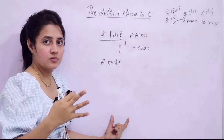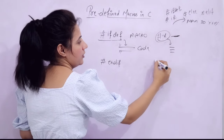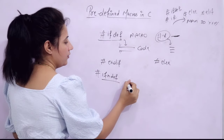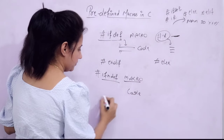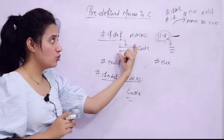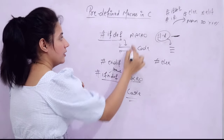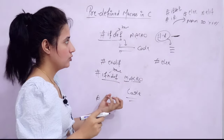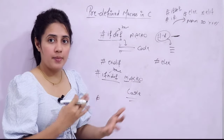If the macro is not defined, that code block won't be included in our source code. Similarly, #if checks an expression — if the expression is true, we enter that block, and after that you can write #else. There is also #ifndef, which returns true if the macro is NOT defined. So if the macro is not defined, that code will be processed; if it is defined, it will not. These are conditional directives you can use to instruct the preprocessor whether to include a particular block of code or not.